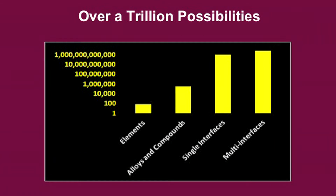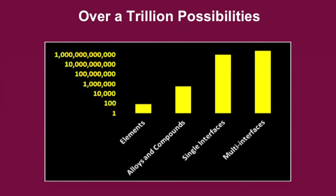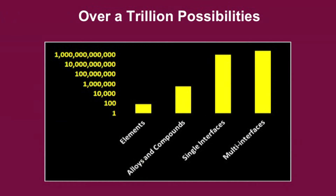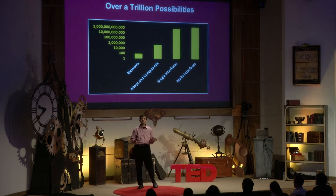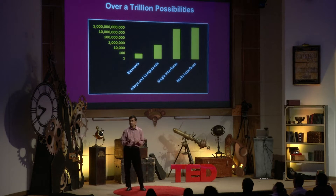These four charts show why it's not simple. If you look at the number of elements one could use, it's about 60 to 70. If you alloy or mix them into compounds, you end up with over 100,000. If you take two of these materials and create a junction, you're in the billions. Put four of those together into a structure and you're in the trillions — over a trillion combinations of possibilities.